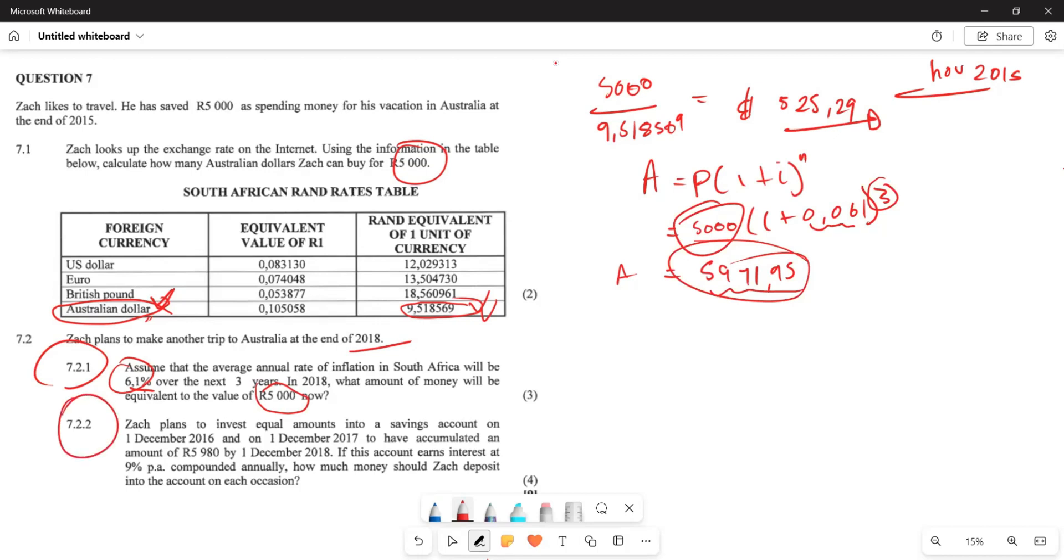Now, let's look at your 7.2. So, they say, Zach now plan to invest the equal amounts into saving account on the 1st of December 2016 and on the 1st of December 2017, to have accumulated an amount of $5,980 by December of 2018. If these accounts, look, this is very important. If these accounts earn interest at 9% per annum, compounded annually, how much should Zach deposit into the account?